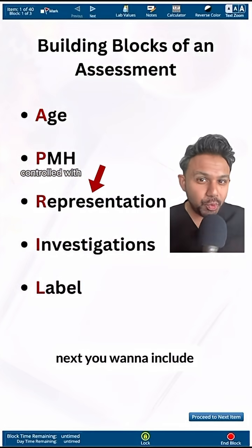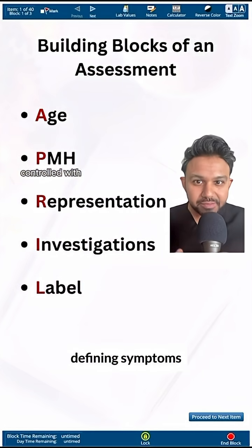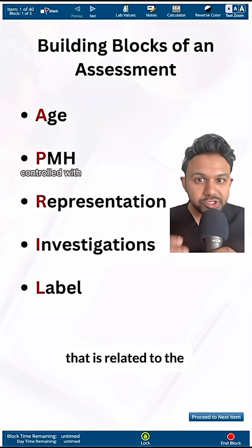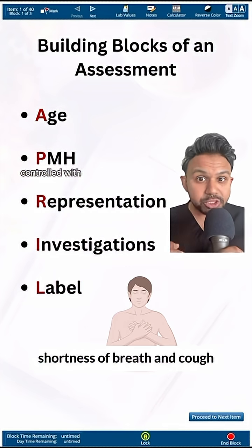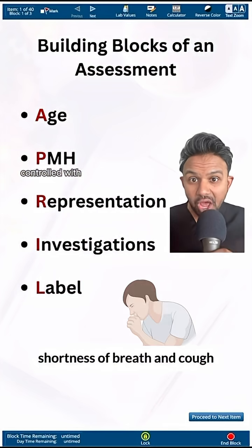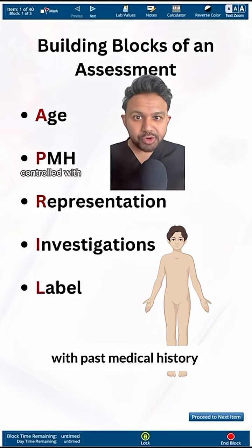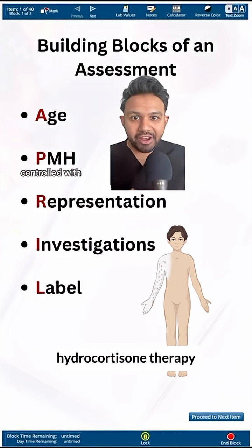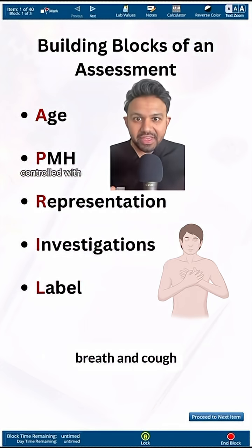Next, you want to include representation. These are going to be the defining symptoms the patient experienced that are related to the underlying diagnosis — for example, for asthma: shortness of breath and cough. To summarize so far, we have: six-year-old male with past medical history of eczema controlled on hydrocortisone therapy, presenting with shortness of breath and cough.